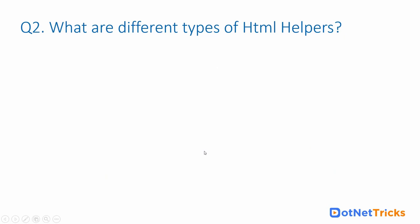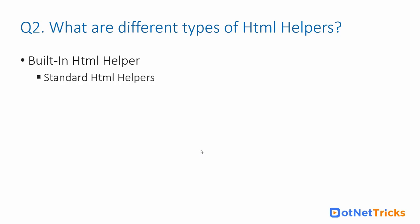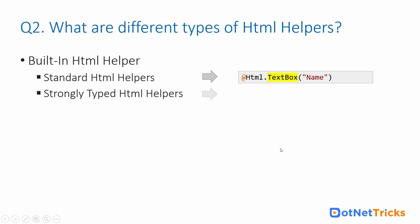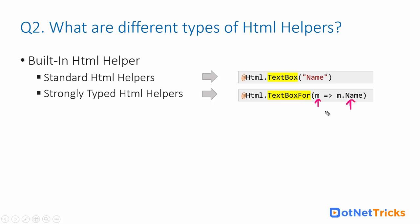The next question is: what are the different types of HTML helpers in ASP.NET Core? Similar to MVC5, we have built-in HTML helpers. These are divided into standard HTML helpers — syntax like @Html.TextBox with the name as a string — and strongly-typed helpers, where we use a lambda expression. In the lambda expression, the parameter represents the model, and the right-hand side is the model property we want to bind.